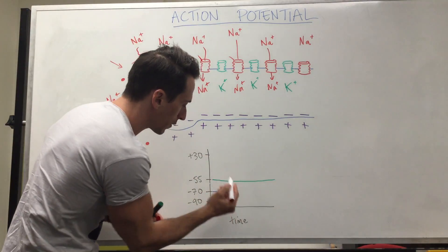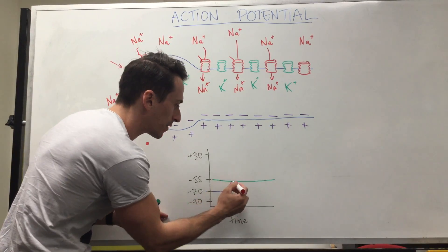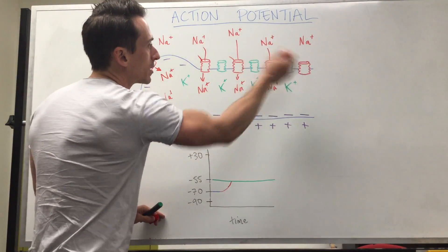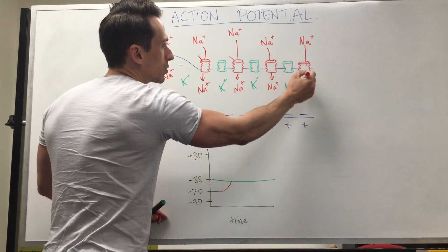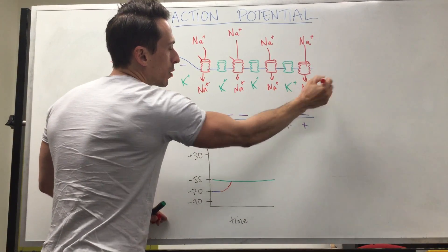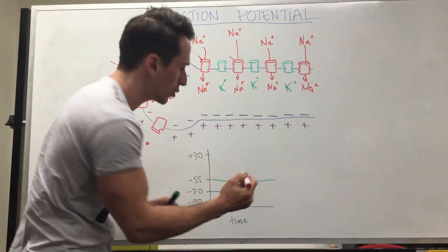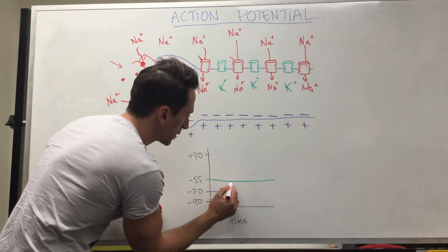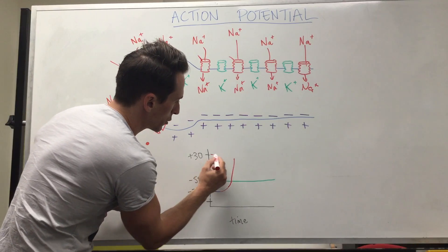If we're to draw it up on the graph, like I said, enough positive sodium goes in, it hits -55, then we open up all these voltage-gated sodium channels and sodium rushes in, taking its positive charge with it. It becomes so positive inside the neuron that this graph spikes up to +30.